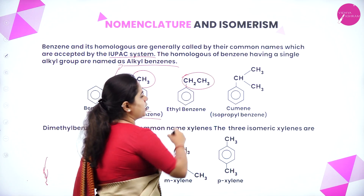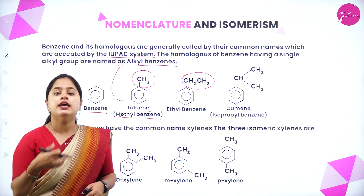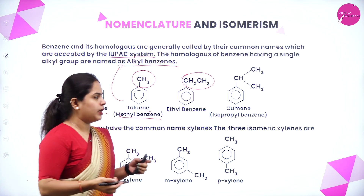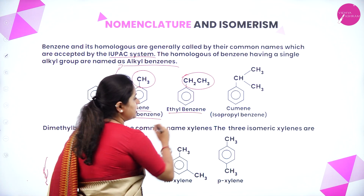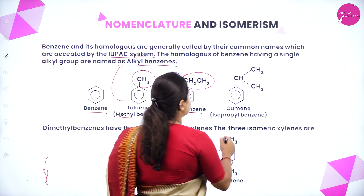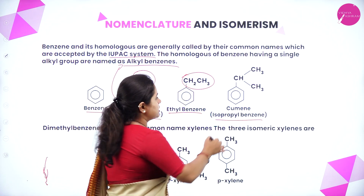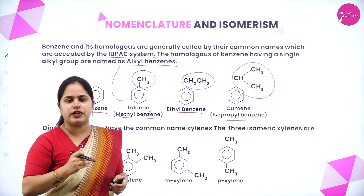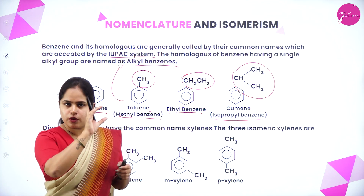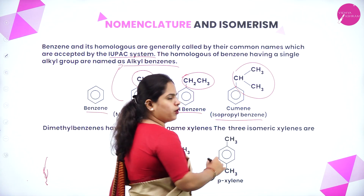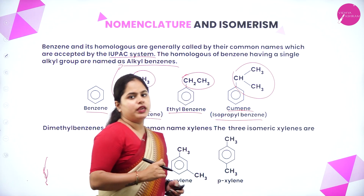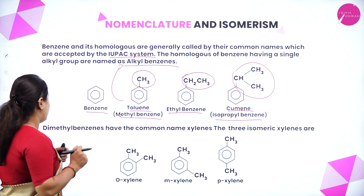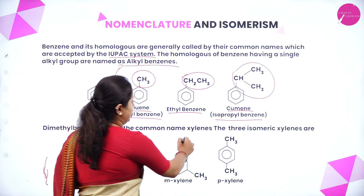If you have CH₂CH₃ (which is C₂H₅, an ethyl group) on benzene, the name will be ethyl benzene. Moving on to the next one — isopropyl benzene — where one particular carbon atom is present as a branch from the principal chain. Another common name for isopropyl benzene is cumene. So the general formula is alkyl benzene.